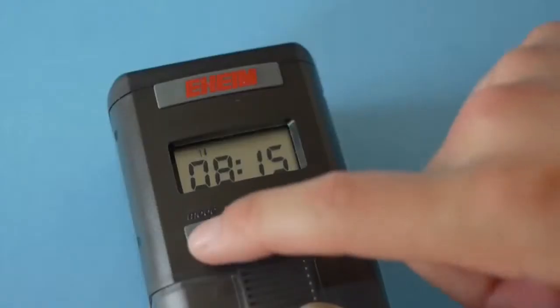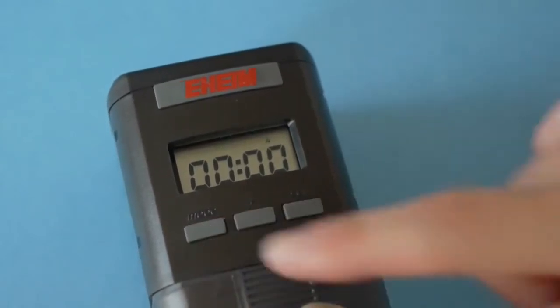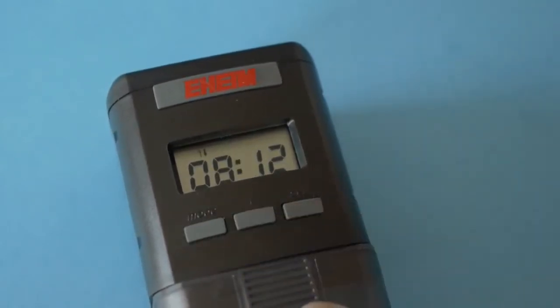Once you have programmed all your feeding times, simply press mode until you get back to the screen showing the current time. This will be indicated by a blinking colon. Your program settings one to four will be displayed on the top of the clock.